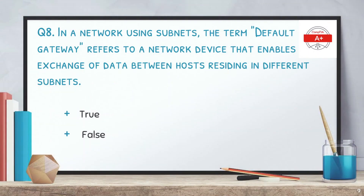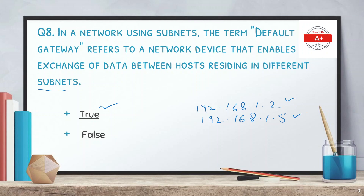Question number 8: in a network using subnets, the term default gateway refers to a network device that enables exchange of data between hosts residing in different subnets. The correct answer is true. If two PCs share the same subnet — for example 192.168.1.2 and 192.168.1.5 — they can communicate without a default gateway. But to communicate with a PC on a different network, you need to configure a default gateway on the hosts.